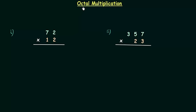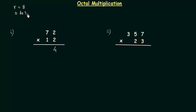The next arithmetic operation is octal multiplication. In the first example we have to multiply 72 by 12. Unlike normal multiplication, we first multiply 72 by 2 and then by 1. 2 multiplied by 2 is 4, and in the octal number system the base or radix is equal to 8, so we have digits 0 to 7. 4 falls in this range, so 4 is an acceptable value.